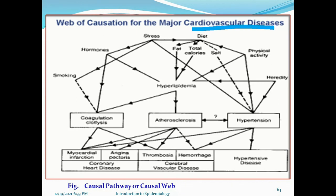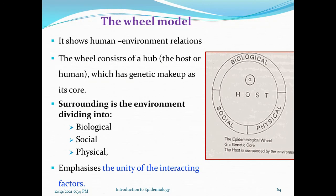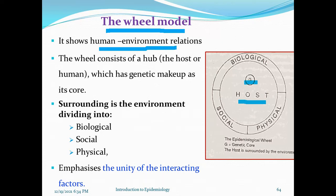This is also the web of causation for major cardiovascular disease, as we can see. The next model is the wheel model. The wheel model has a genetic core at its center, and the host content balances the surrounding environment.